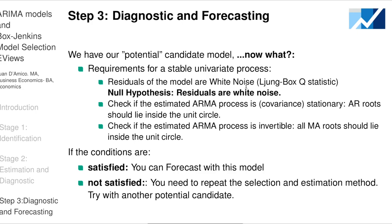Now step three: diagnostic and forecasting. We have our candidate model ARIMA(1,1,3). We need to ensure it satisfies the requirements for a stable univariate process. We check that the residuals of the model are white noise using the Ljung-Box Q statistic, which tests the null hypothesis that all residuals are white noise.